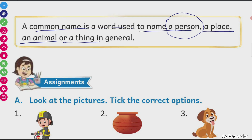The person wearing a white color gown is a doctor. A person wearing a uniform with a gun is a policeman. A person with a fire extinguisher is a fireman. Like this, every person is divided into certain groups and they have a common name.